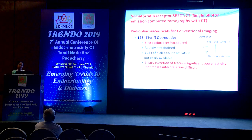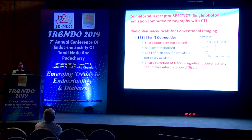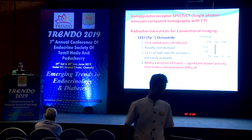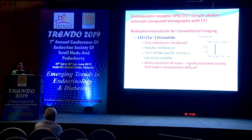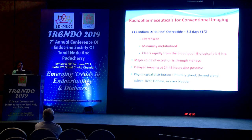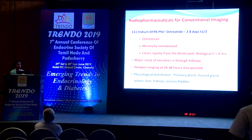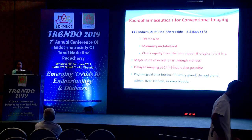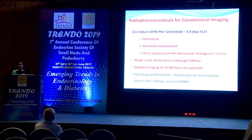SPECT-CT imaging began with Iodine-123 octreotide, the first radiotracer introduced for somatostatin receptor (SSTR) imaging. It had difficulties including labeling challenges and significant bowel activity that complicated interpretation. Then we moved to Indium-111 DTPA octreotide — conventionally called Octreoscan — which had advantages: renal excretion, less GI uptake, delayed imaging capability, and rapid blood pool clearance. It was used until new PET tracers were introduced.